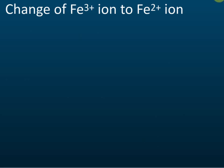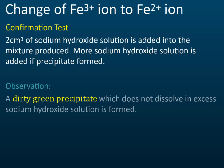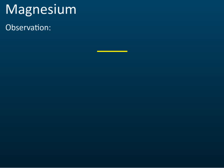Confirmation test for iron 2 ion: add sodium hydroxide to see whether a precipitate forms. Add more sodium hydroxide and observe the color. The solution forms a dark dirty green precipitate, which does not dissolve in excess sodium hydroxide. This dirty green precipitate confirms the presence of iron 2 ion.